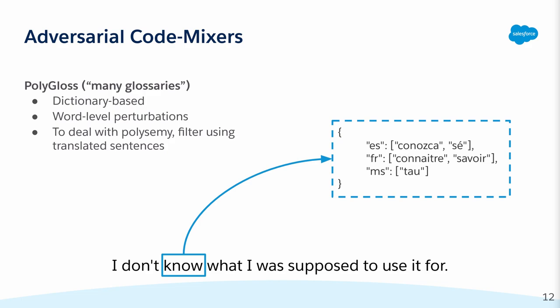The main difference between our two proposed attacks is the method by which we generate the candidate perturbations. Our first attack, Polygloss, uses bilingual word dictionaries as its source of candidate perturbations. However, some words may have multiple senses and different translations for each sense. Rather than use a word-sense disambiguation model, which could be much slower, we simply check if the candidates are present in the translated sentences. One disadvantage of this approach, though, is that many valid candidates are discarded, affecting the attack's success rate.